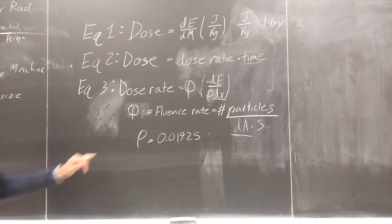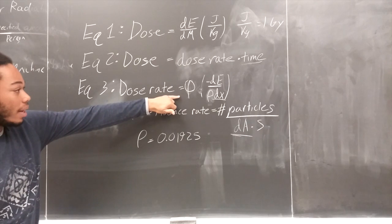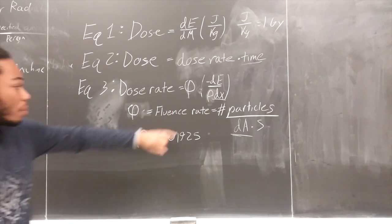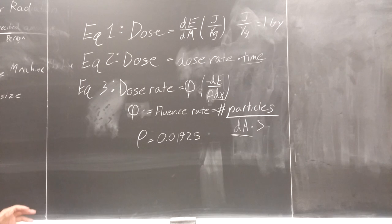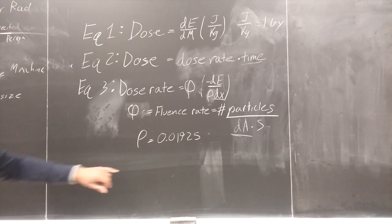Now, dose rate has fluence, which is represented by this symbol, and density, which is represented by this. Fluence rate is written as particles over the cross-section, dA, divided by S, which is the same. Density itself is specifically for tungsten, which is why you see a value, and that value is 0.01925.